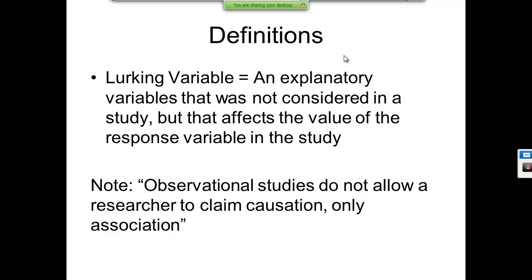A lurking variable is an explanatory variable that was not considered in a study but affects the value of the response variable. Note that observational studies do not allow researchers to claim causation — only association. For example, if you observe that people eating a lot of pizza are doing well in school, that does not mean pizza is causing that result. You have to be careful about that.